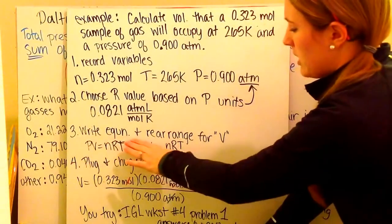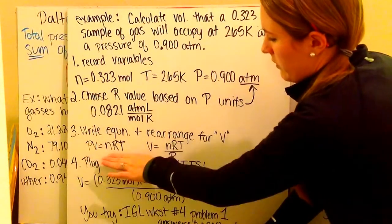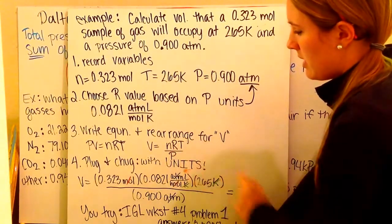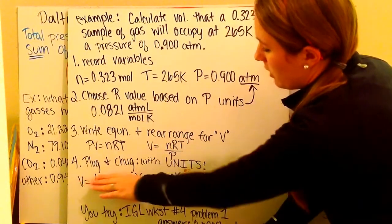Then, we'll write out our equation and rearrange for V. So, my PIVNRT equation's here, I rearrange for V. So, V is NRT divided by P. Step four, I'm going to plug and chug. Remembering to use my units.